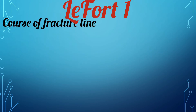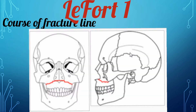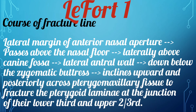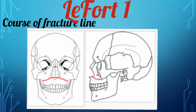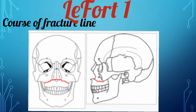The fracture line of the LeFort 1 fracture commences at a point on the lateral margin of the anterior nasal aperture, passes above the nasal floor, and passes laterally above the canine fossa, traversing the lateral antral wall, which then dips down below the zygomatic buttress, and then inclines upward and posteriorly across the pterygomaxillary fissure to fracture the pterygoid laminae at the junction of the lower third and upper two-thirds.